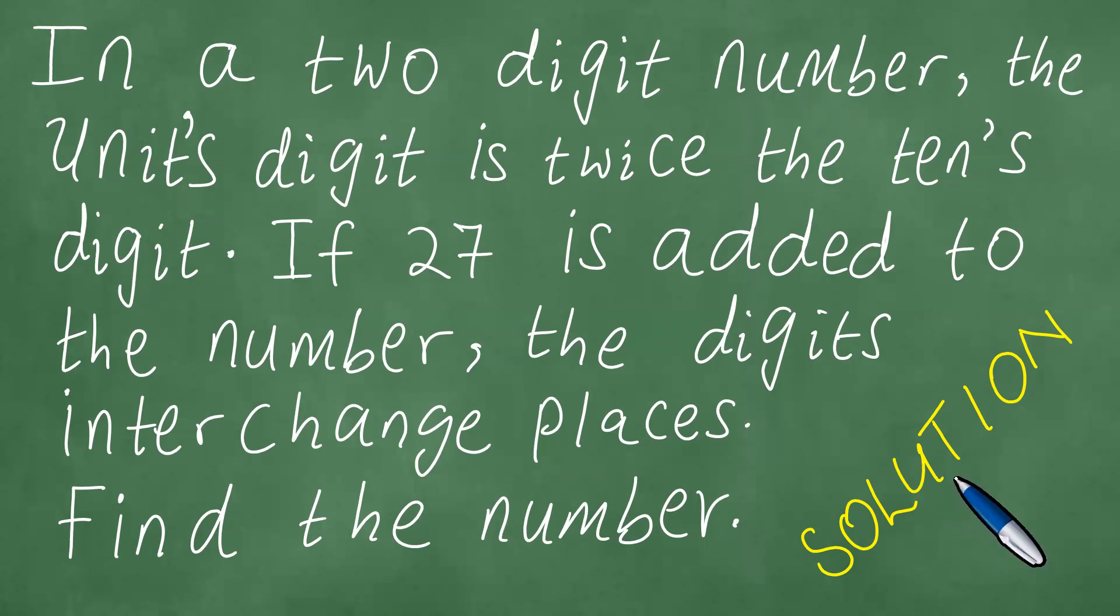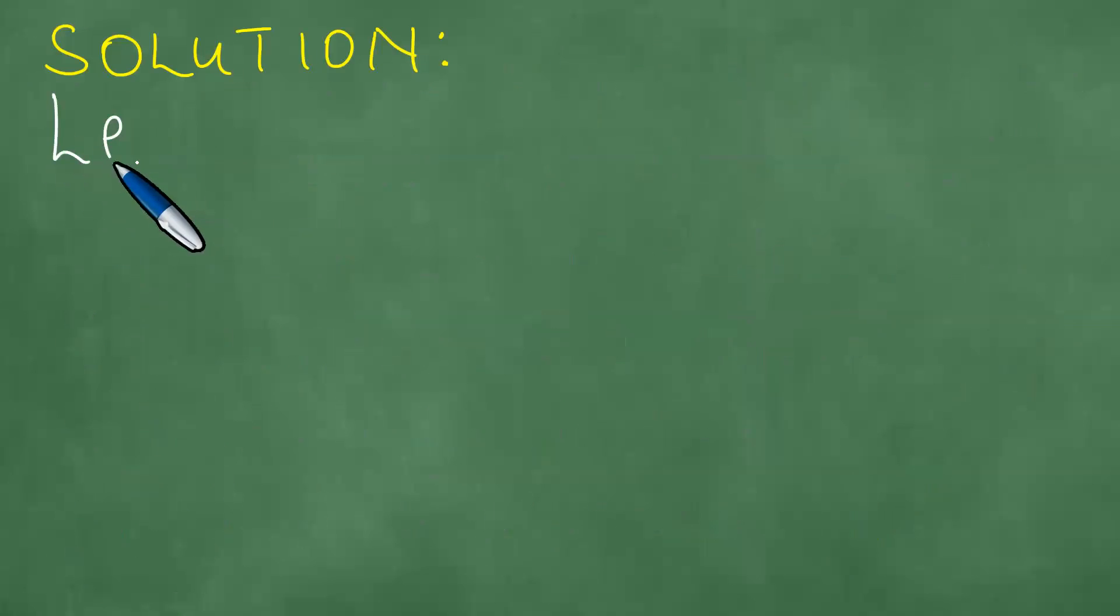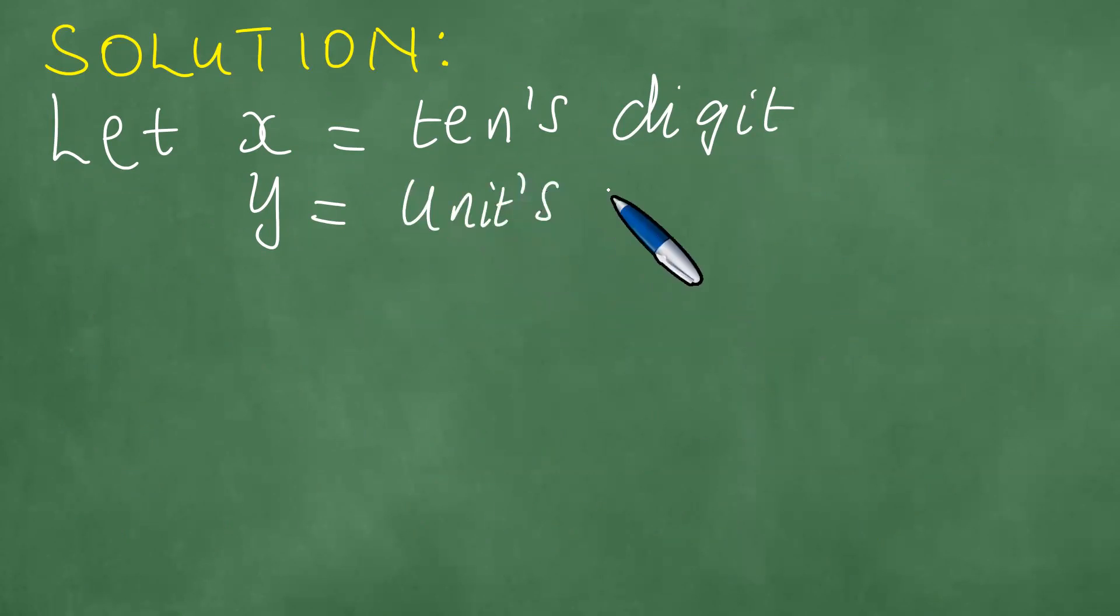We present a solution to this problem as follows. Let x be equal to the tens digit, and y be equal to the units digit. The number is going to be 10x plus y.